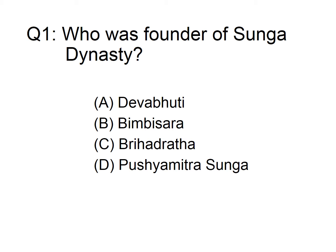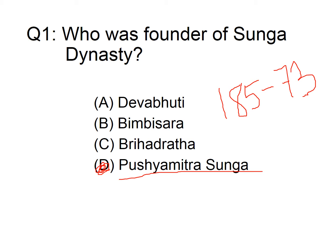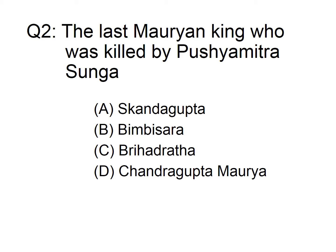Here is the first question: Who was the founder of the Sunga dynasty? Option A: Devabhuti, B: Bimbisara, C: Brihaddatha, D: Pushyamitra Sunga. The answer is option D, Pushyamitra Sunga. The dynasty was established in 185 BC and continued till 73 BC. The last ruler of this dynasty was Devabhuti. The last Mauryan king who was killed was option C: Brihaddatha.